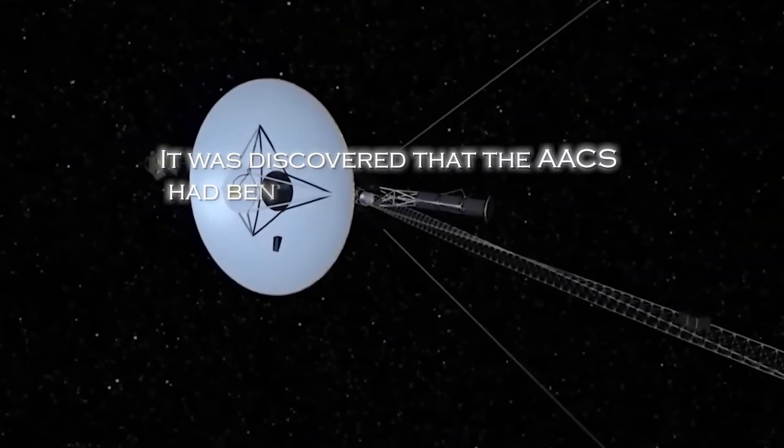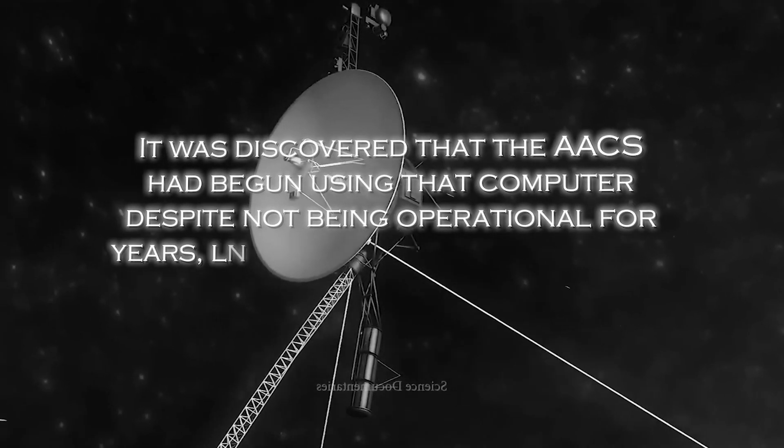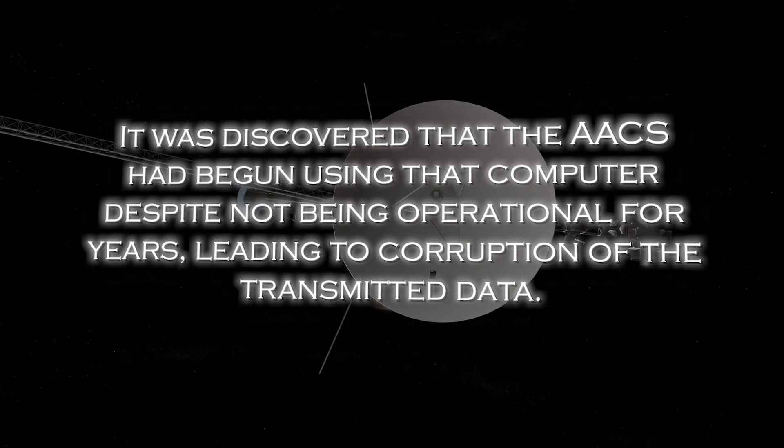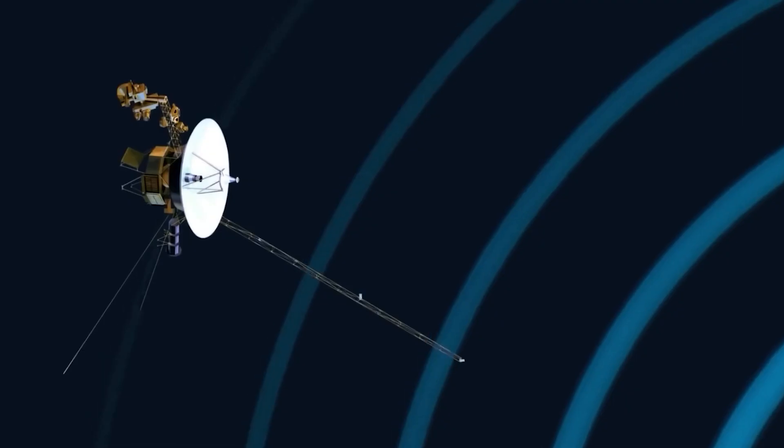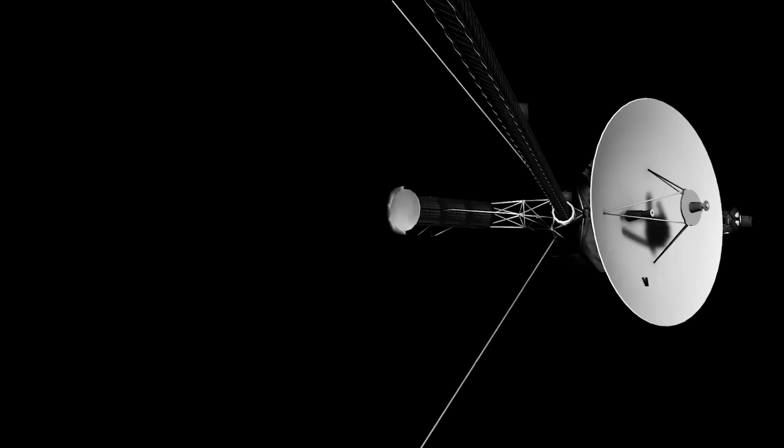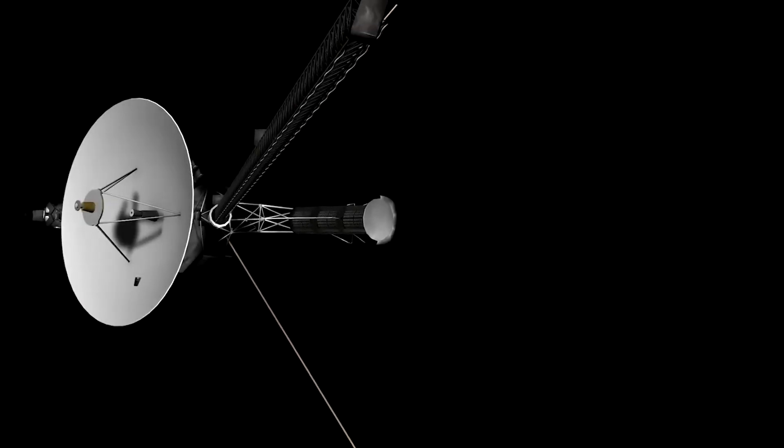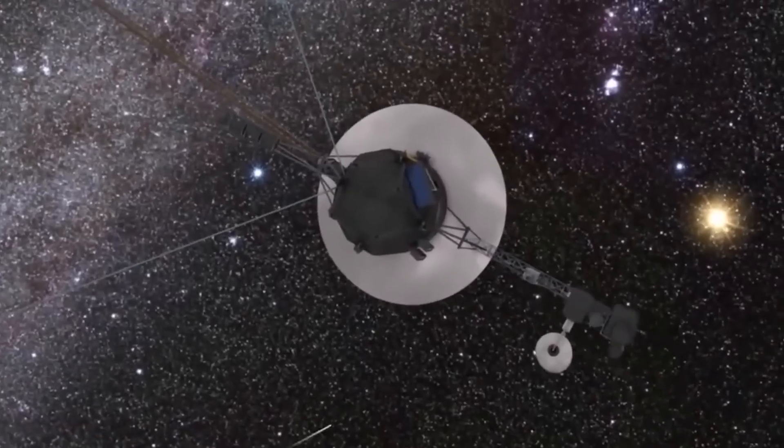Surprisingly, it was discovered that the AACS had begun using the computer despite not being operational for years, leading to corruption of the transmitted data. However, the rest of the spacecraft remained operational and continued to collect data. Engineers acted quickly and sent a command to Voyager 1 instructing the AACS system to shift to the correct computer to transmit the telemetry data.